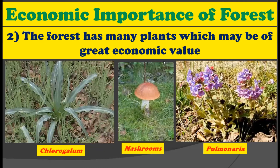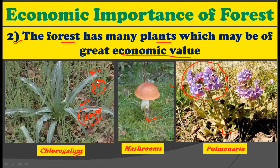The second economic importance is that the forest has many plants which may be of great economic value. The first plant is Chlorogalum, known as the soap plant, from which various soaps can be made and which is also used for medicinal purposes. Second, we have mushroom, which is not only edible but also a medicinal plant. Then we have Pulmonaria, which is found in the forest and is used for lung diseases. These medicinal and edible plants, plus other plants of great economic importance, are all present in the forest, and the forest is the source for all of them.